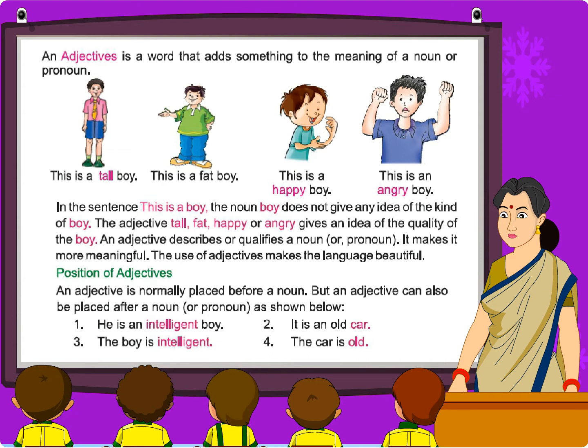This is a tall boy. This is a fat boy. This is a happy boy. This is an angry boy. In the sentence 'this is a boy,' the noun 'boy' does not give any idea of the kind of boy. The adjectives tall, fat, happy, or angry give an idea of the quality of the boy.